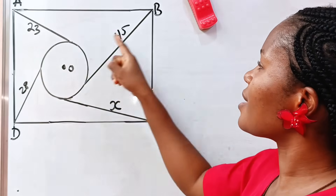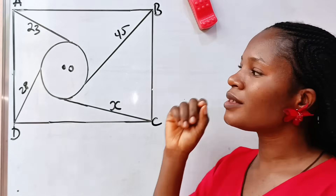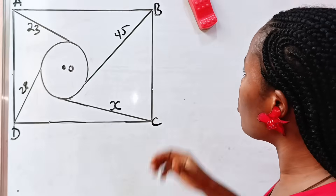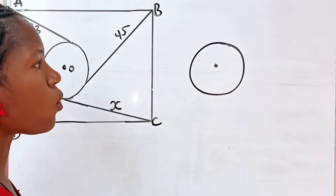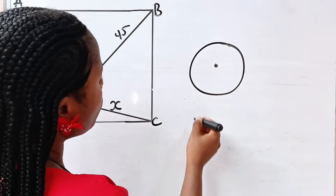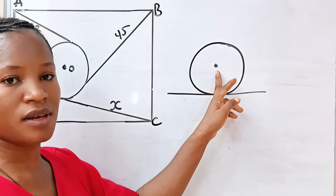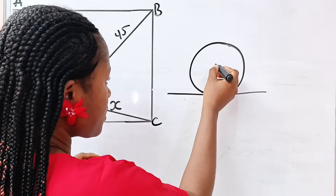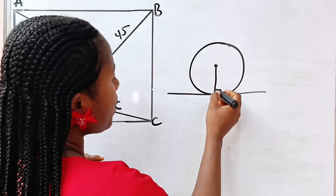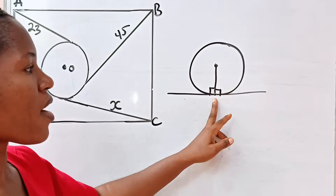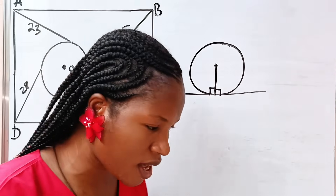First of all, notice that these lines are tangents — these are tangents. Now remember that in a circle of center O, if you have a tangent to the circle and you draw a straight line from the center to the point of contact, you are going to form a right angle triangle. So you have a right angle here.